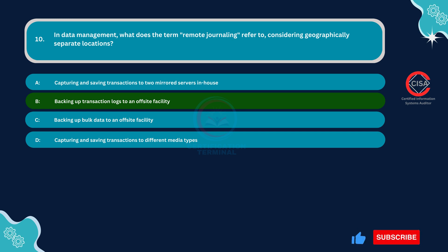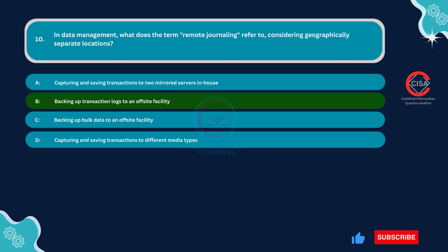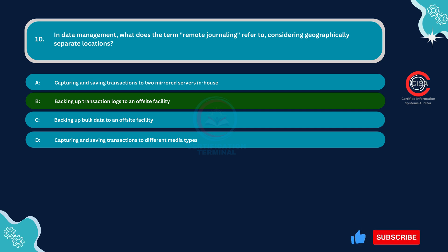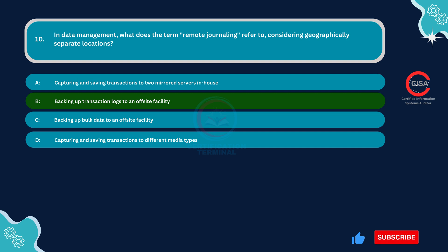Remote journaling involves capturing and saving transaction logs to a separate location, often in a different geographic area from the primary data center. This ensures that transactional data is securely stored off-site, providing resilience against disasters or failures at the primary site. It enables organizations to recover transactional data and restore operations in the event of a system failure, data corruption, or other unforeseen incidents.